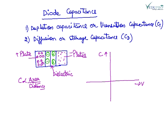If we reverse bias the PN junction, the depletion region increases. As the widening of the depletion region takes place, distance is increasing. As the distance increases, capacitance will decrease. So the plot will be like this.